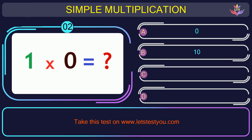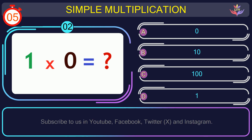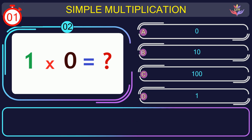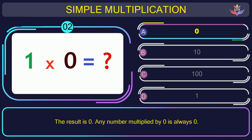Question number 2: what is the result when you multiply 1 by 0? The correct answer is option A: 0. The result is 0. Any number multiplied by 0 is always 0.